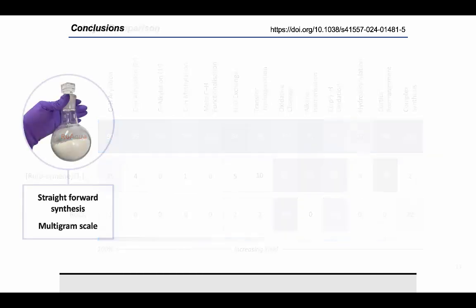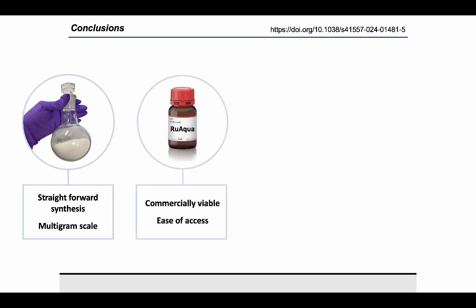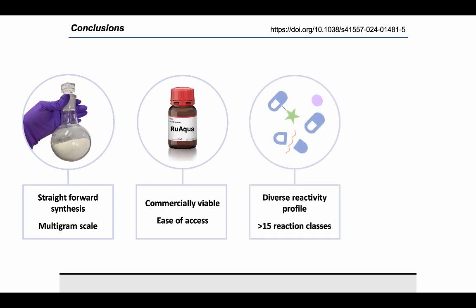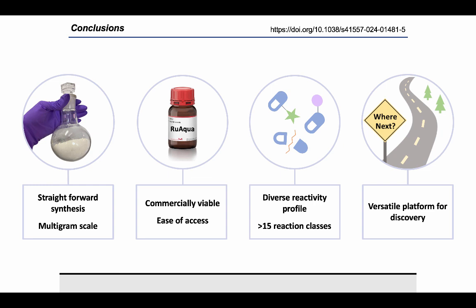So if you are considering trying some ruthenium catalysis, we hope that you keep RuAqua in mind. Today I've gone through the synthesis of RuAqua, which can be made on a decagram scale in an easy and straightforward manner. This, in combination with its long-term air and moisture stability, means that it's commercially viable, which is really important when you consider facilitating access to the wider community as a whole. We're currently in talks with different providers at the moment to try and get this on the market so that you can get your hands on some as easily as possible. RuAqua also boasts an extremely diverse reactivity profile with over 15 different reaction types already established. This high reactivity makes RuAqua an extremely versatile platform for discovery, and I can't wait to see what other people are able to use it for now that the paper has been published.